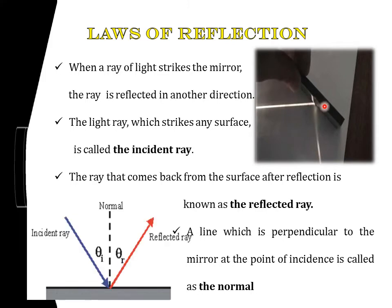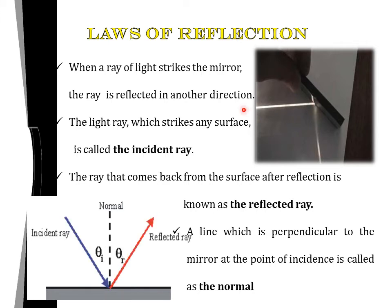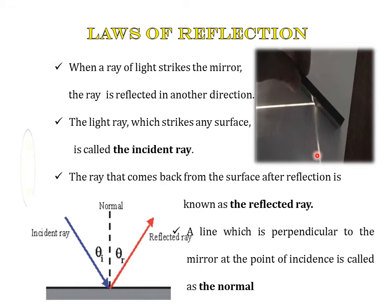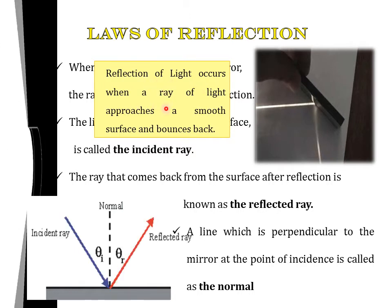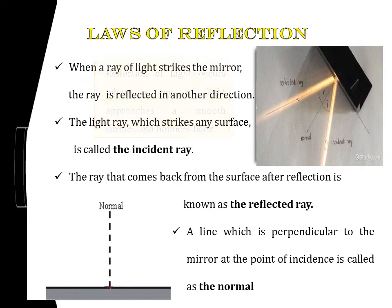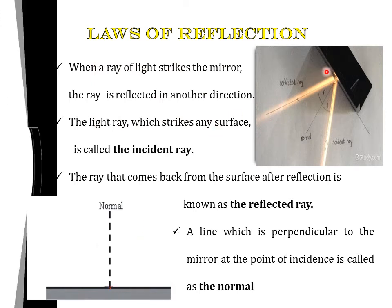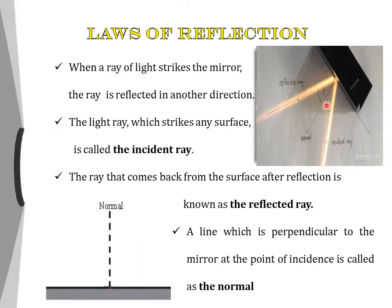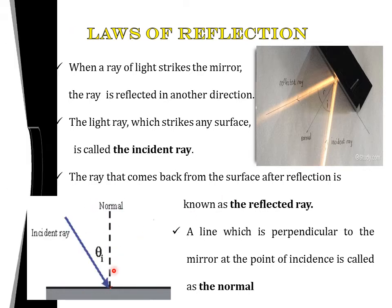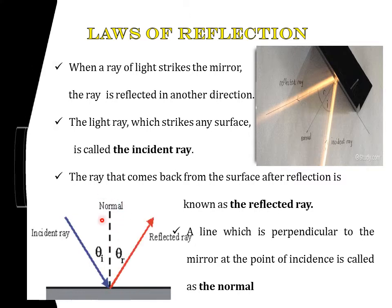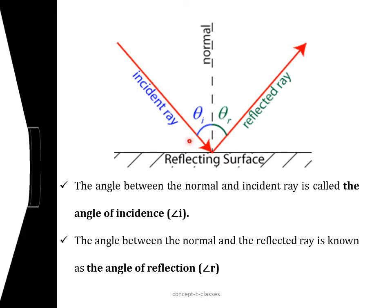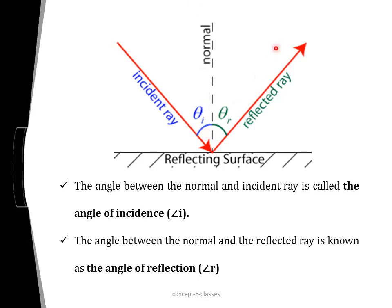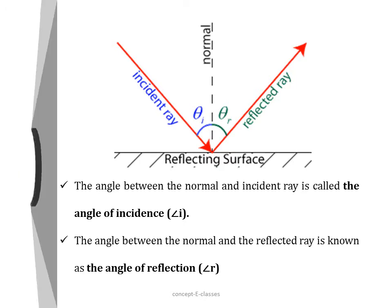If we throw light from a torch or a laser onto a small piece of mirror, we observe that when the ray of light strikes the mirror, it is reflected in another direction. This process is termed the reflection of light. The light ray which strikes a surface is termed the incident ray, the ray that comes back after reflection is the reflected ray, and the line perpendicular to the surface at the point of incidence is termed the normal. The angle between the normal and the incident ray is the angle of incidence, and the angle between the normal and the reflected ray is the angle of reflection.